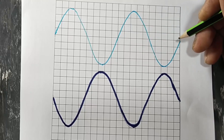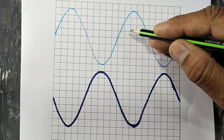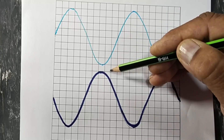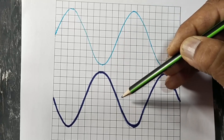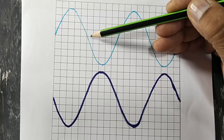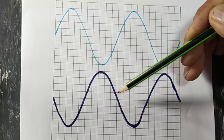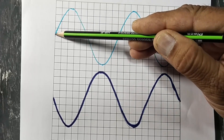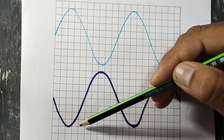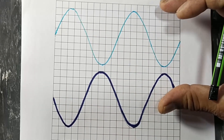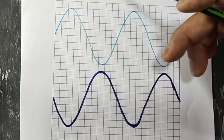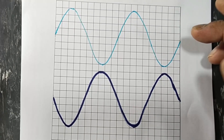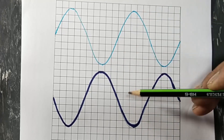In the time-per-division setting, the time sweep makes the same trigger for both channel one and channel two. So the starting edge for both signals will be the same. We can say this signal is starting from here and this signal is starting from here. The oscilloscope does not make any difference between the signals, because the time-per-division setting makes the same trigger for both channels.